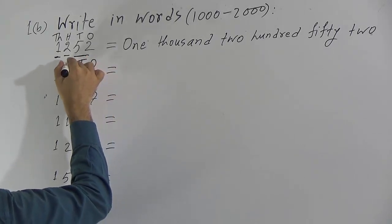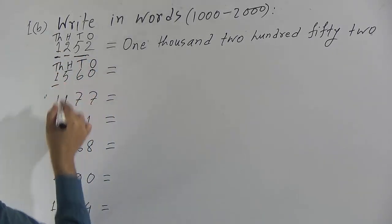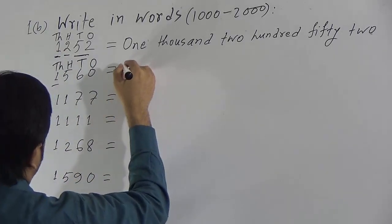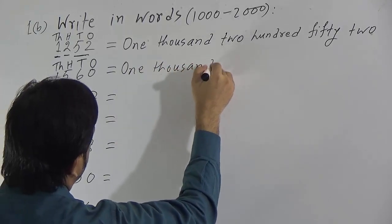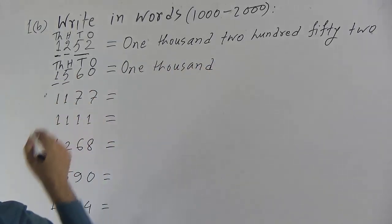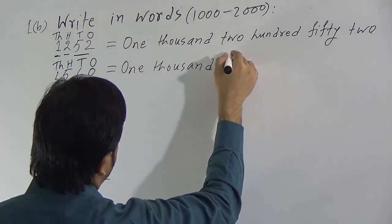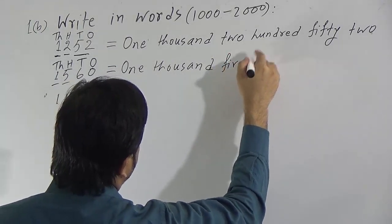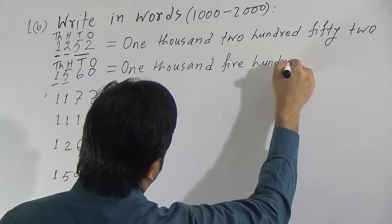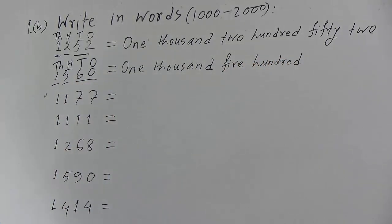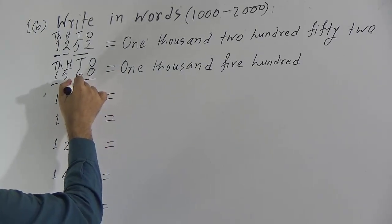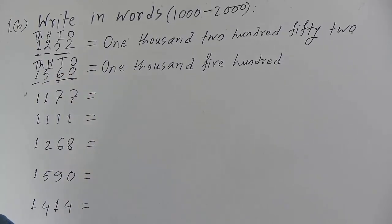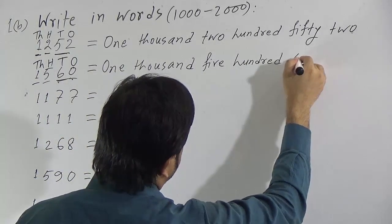Here 1 is in the 1000's position, so we write 1000. Then 5 is in the 100's position, so we write 500 — remember that. Then combining the last 2 digits: this is 60. 6 is in the 10's position and 0 is in the 1's position, so combined this is 60. We write 60 here.